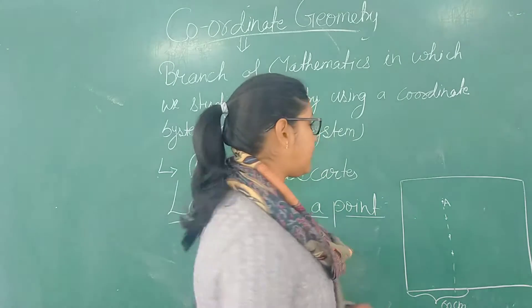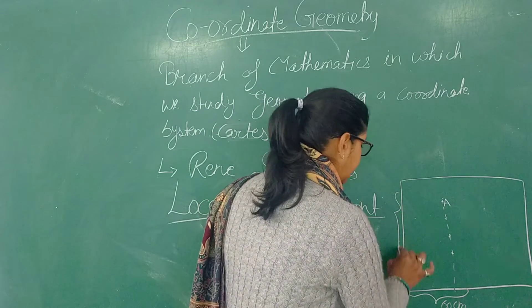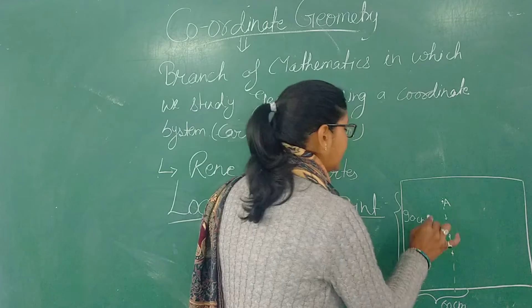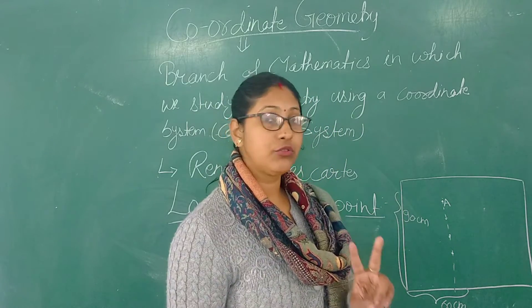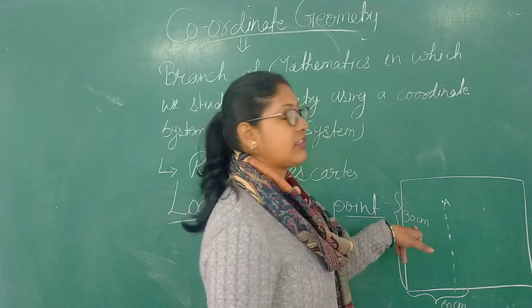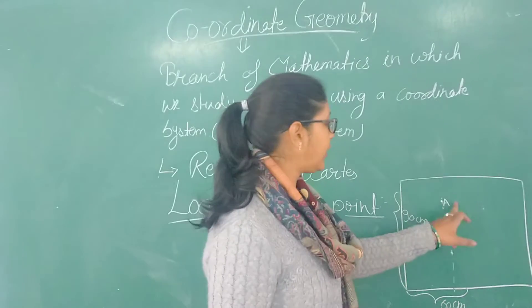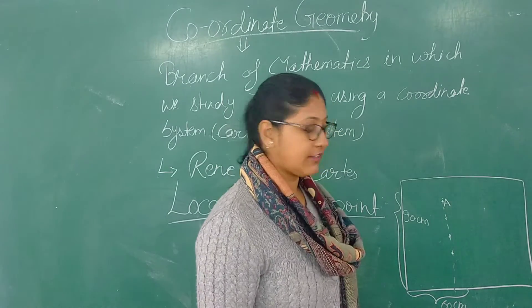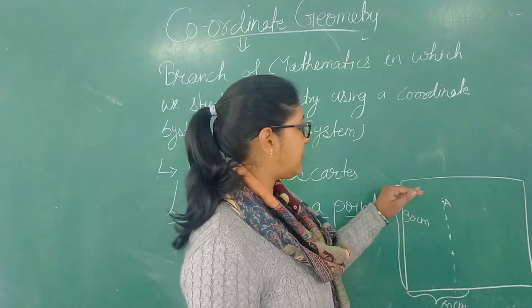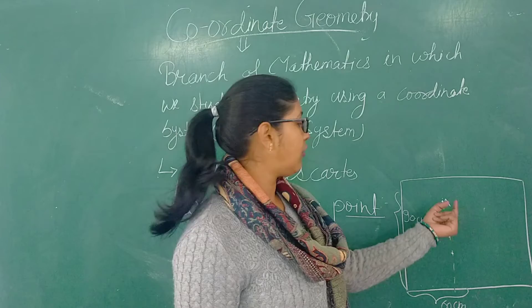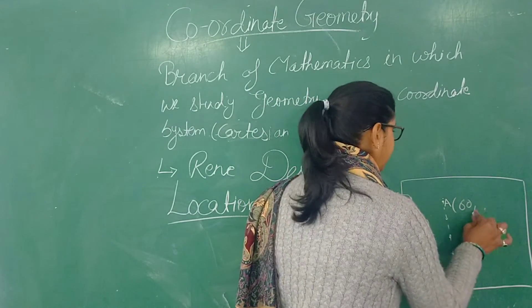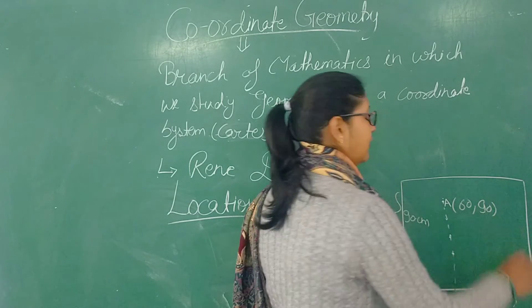Suppose there is given another distance, that this length is 90 cm. So when we have two values, 60 cm and 90 cm, then we can say that this point A is far away 60 cm from the left edge and 90 cm from the bottom edge. Now it is a fixed point, and we can represent it as (60, 90) cm.